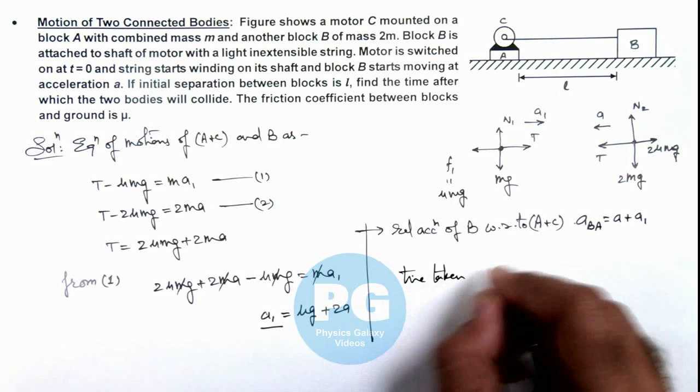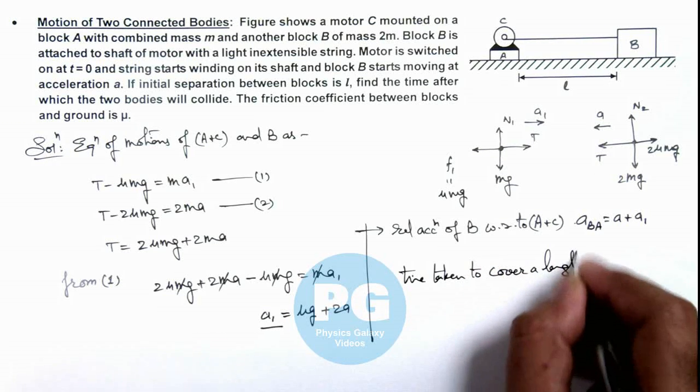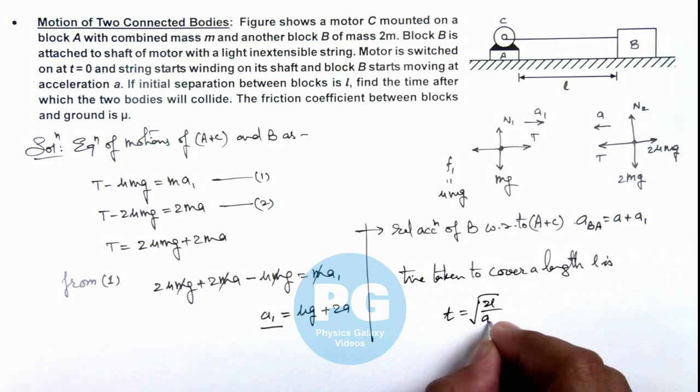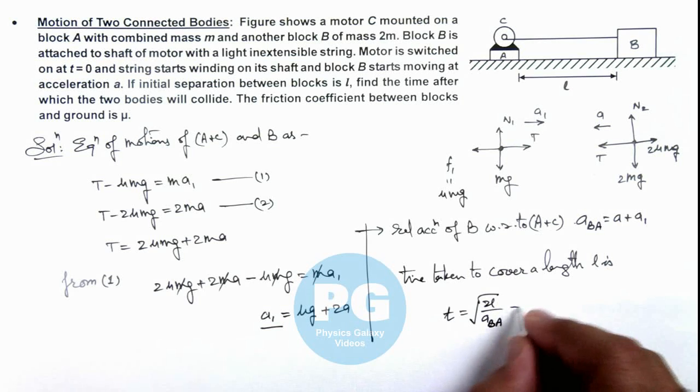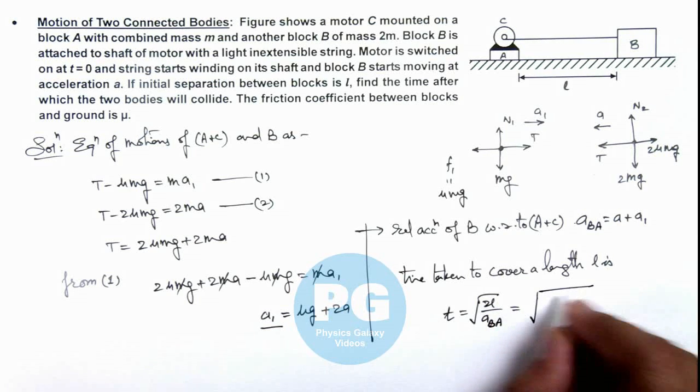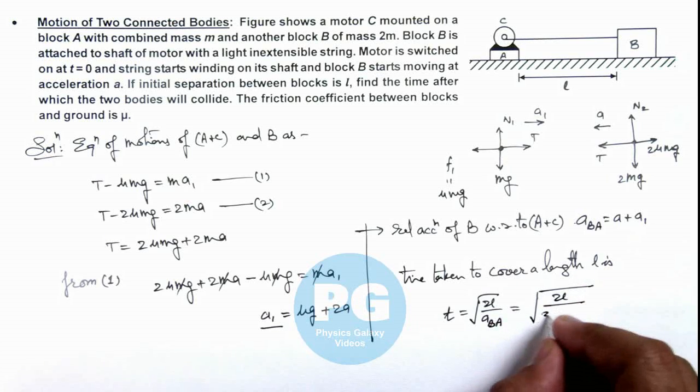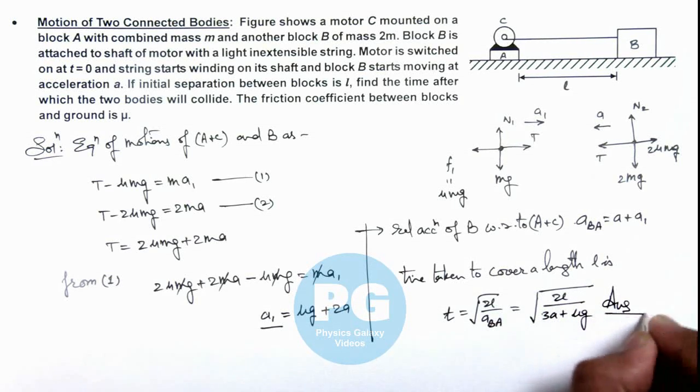Taken to cover a length of L is, this time can be written as root 2L by acceleration of B with respect to A. In time t, L will be half a times t squared, directly we can write it. So the time we are getting is root 2L divided by a plus a1. The value of a1 is μg plus 2a, so this is 3a plus μg. That will be the final result of the problem.